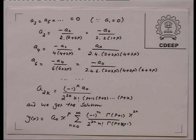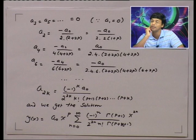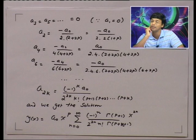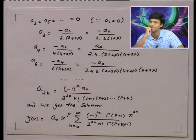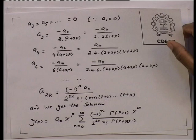If p is not an integer, this process gives two linearly independent solutions. When p equals zero, you cannot get two solutions because zero is a repeated root. When p is a positive integer, we have found one solution, but unfortunately the second solution obtained by the same formula simply becomes a multiple of the first. We do not get two independent solutions that way, but let us be happy — we have at least one solution. It is a second-order ODE so there will be two linearly independent solutions.